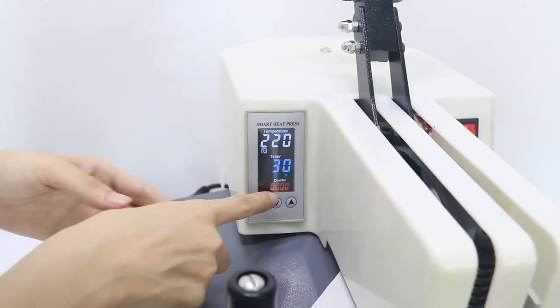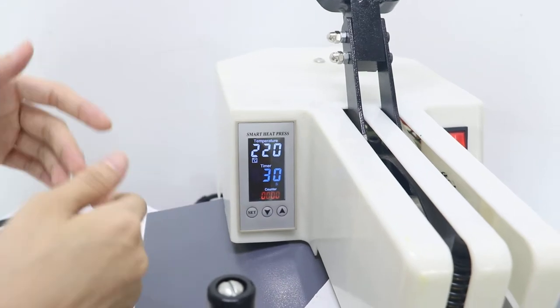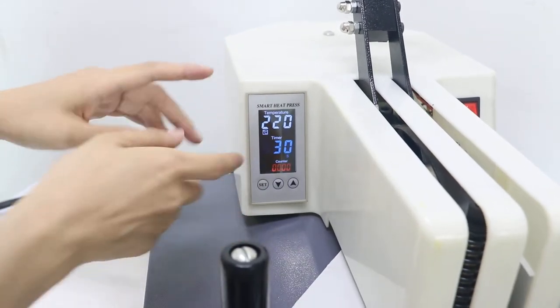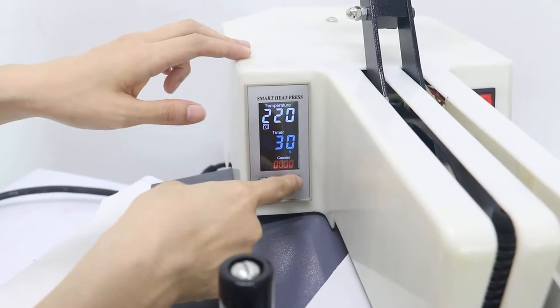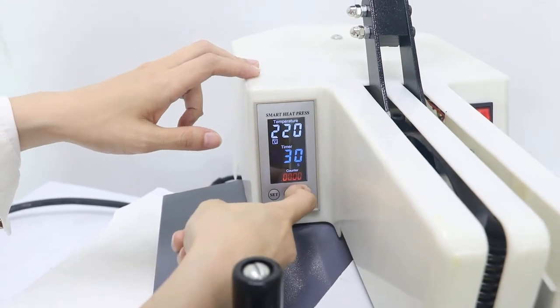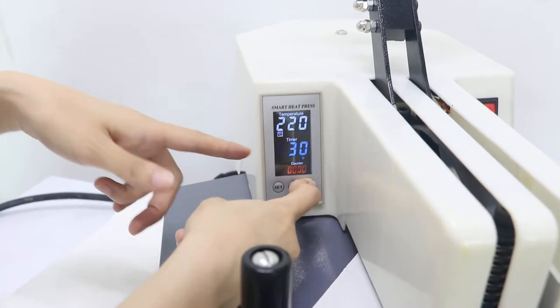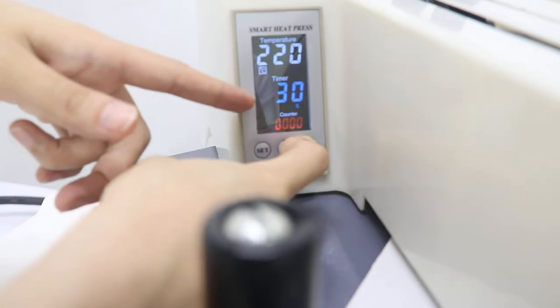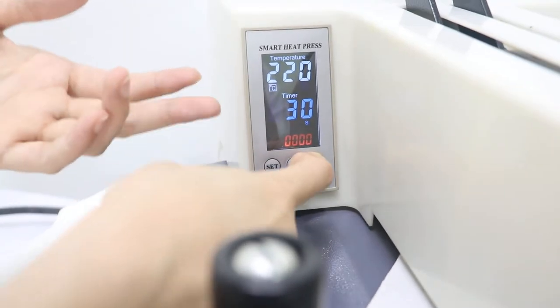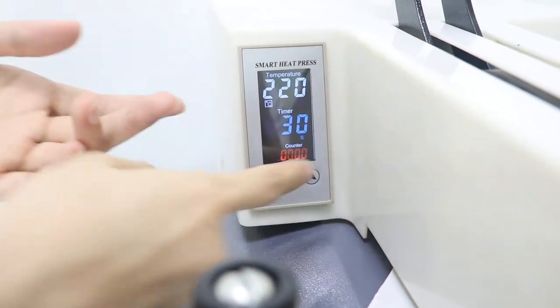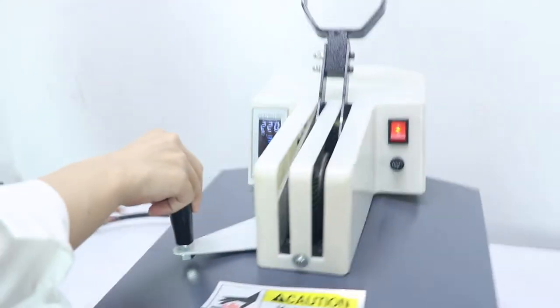You can see it's the counter. Once we finish one time printing, it will count one time. If you want to clear it, we have to press this button for about 5 seconds. It will blink and then turn to zero. You can see it's blinking. Because it's no number, so it's set to zero. Okay, finished. Now we just push it here.